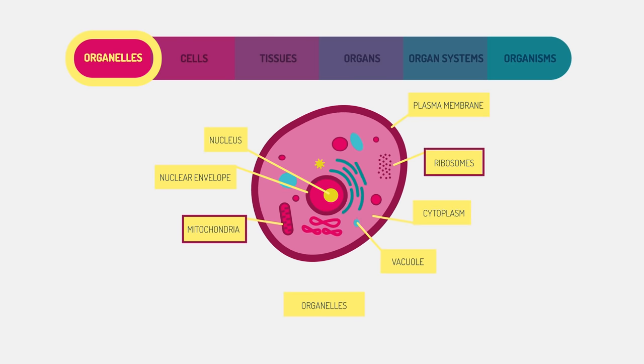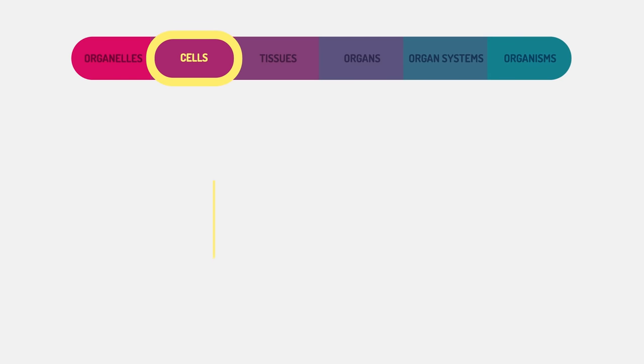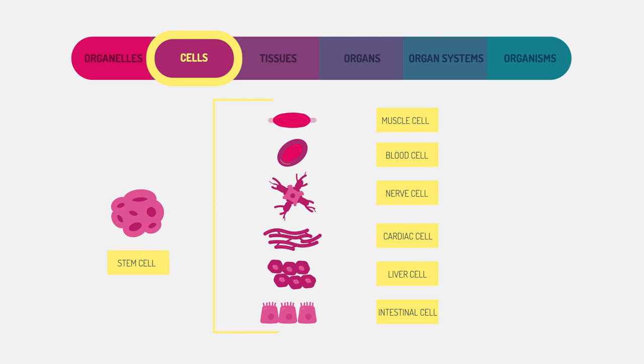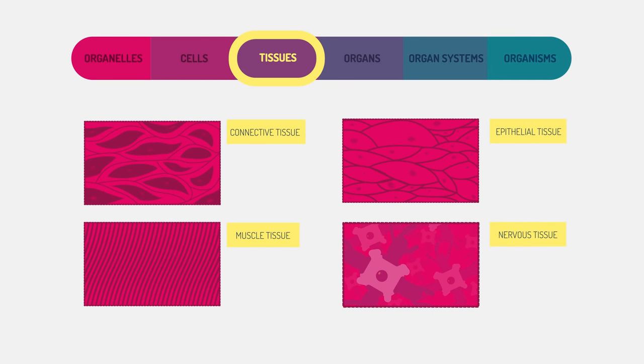Cells themselves are the basic structures that make up living organisms. In multicellular organisms, they are differentiated to carry out different roles. Here are a few specialized human cells.